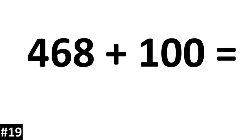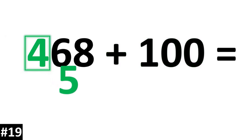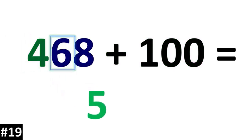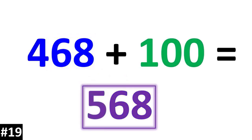468 plus 100. 468 has a hundreds digit of 4, so if we add by another hundred, that 4 becomes a 5. The other numbers stay the same, and we have 568.